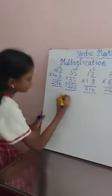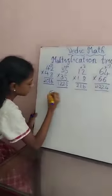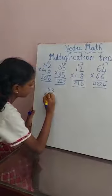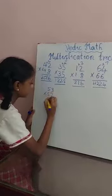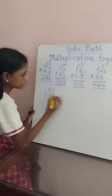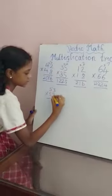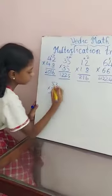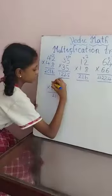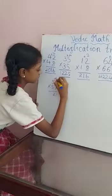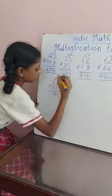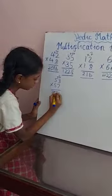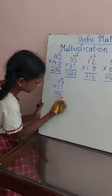53 into 57. 3 plus 7 is equal to 10. 3 into 7 is 21. Successor of 5 is 6. 5 into 6 is 30. So this is the answer: 3021.